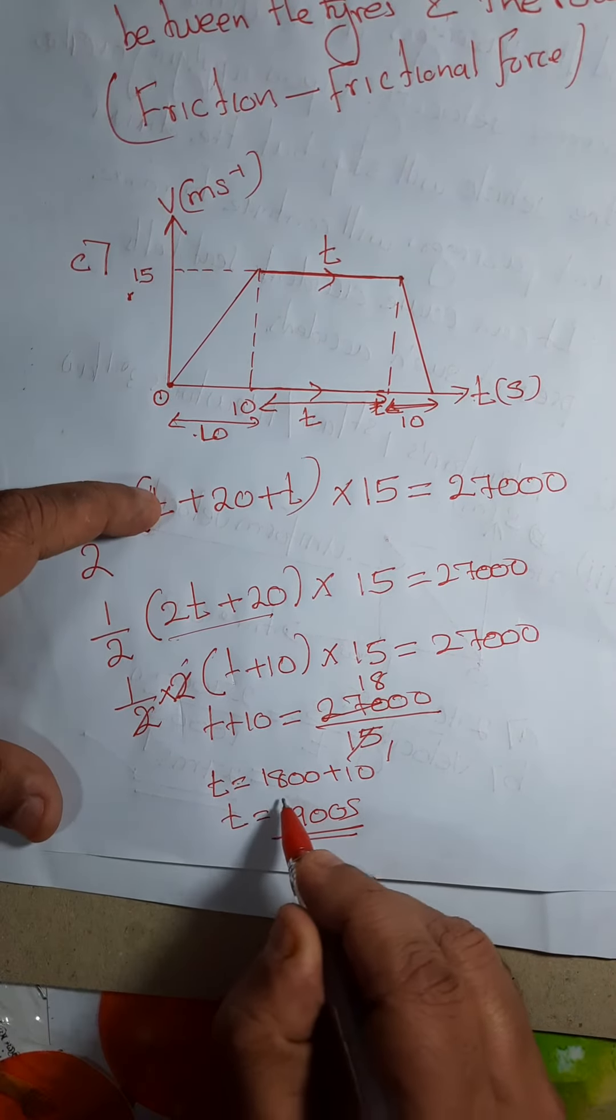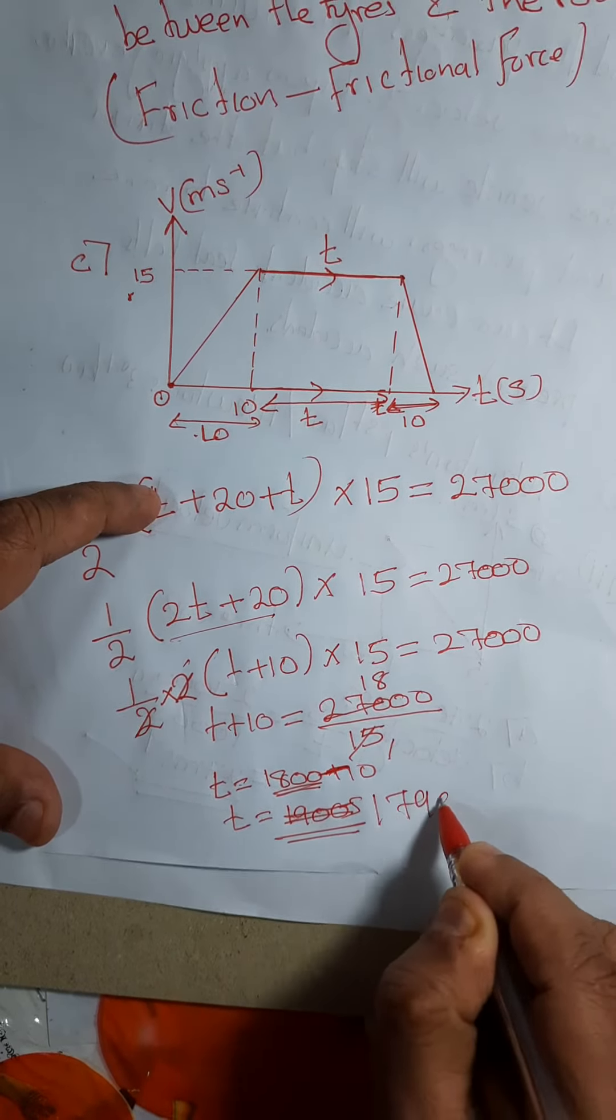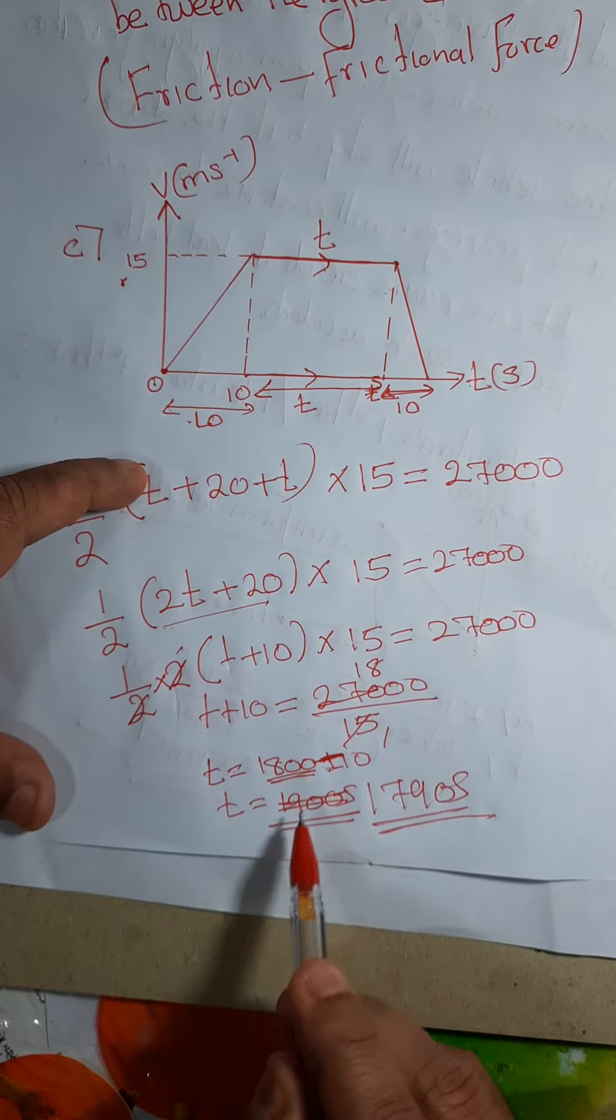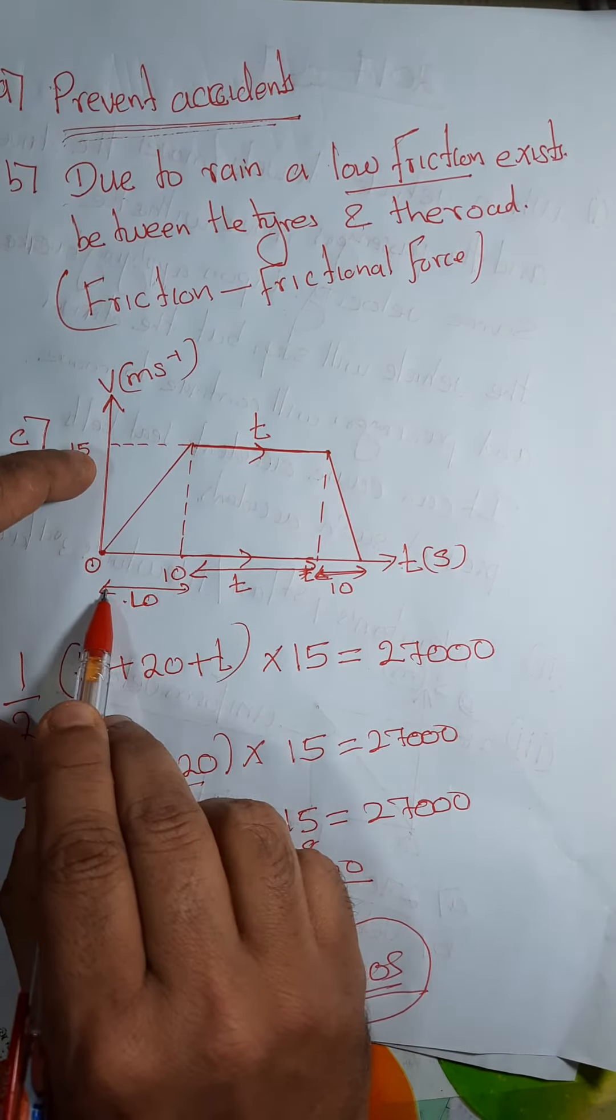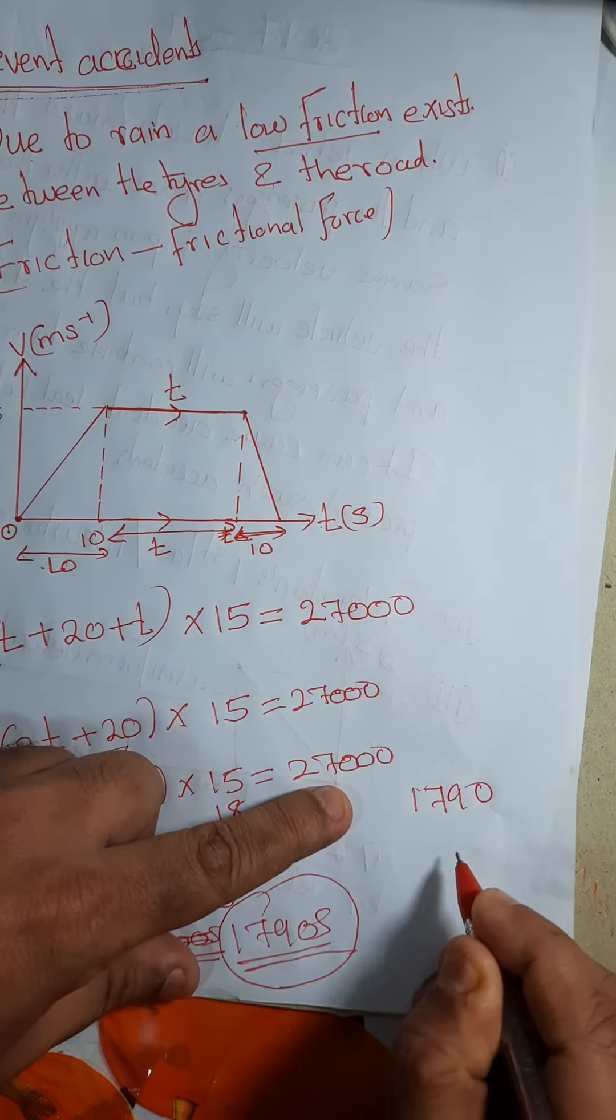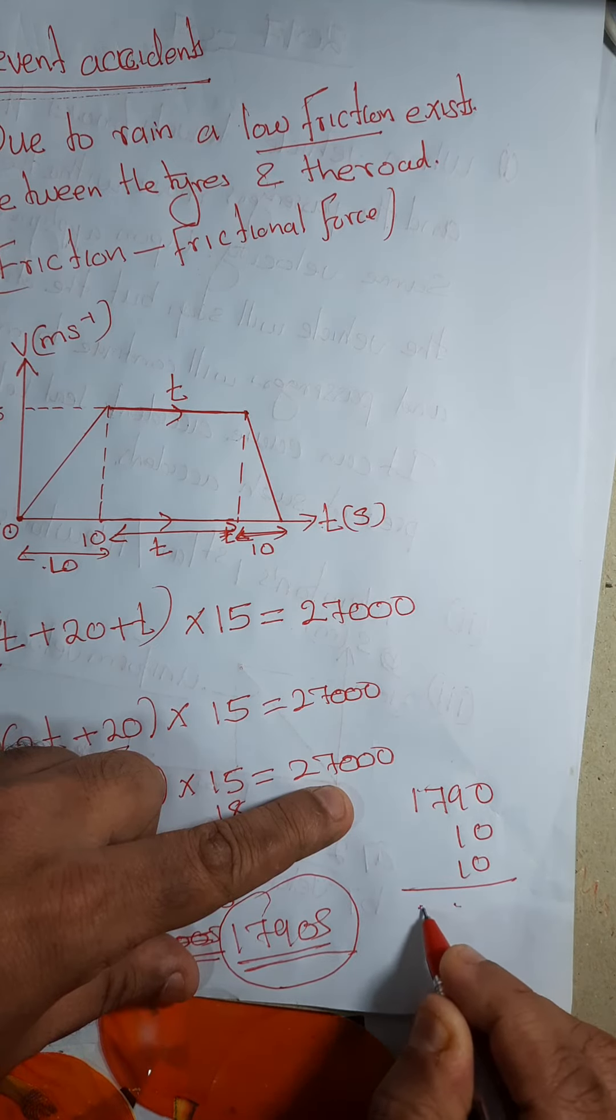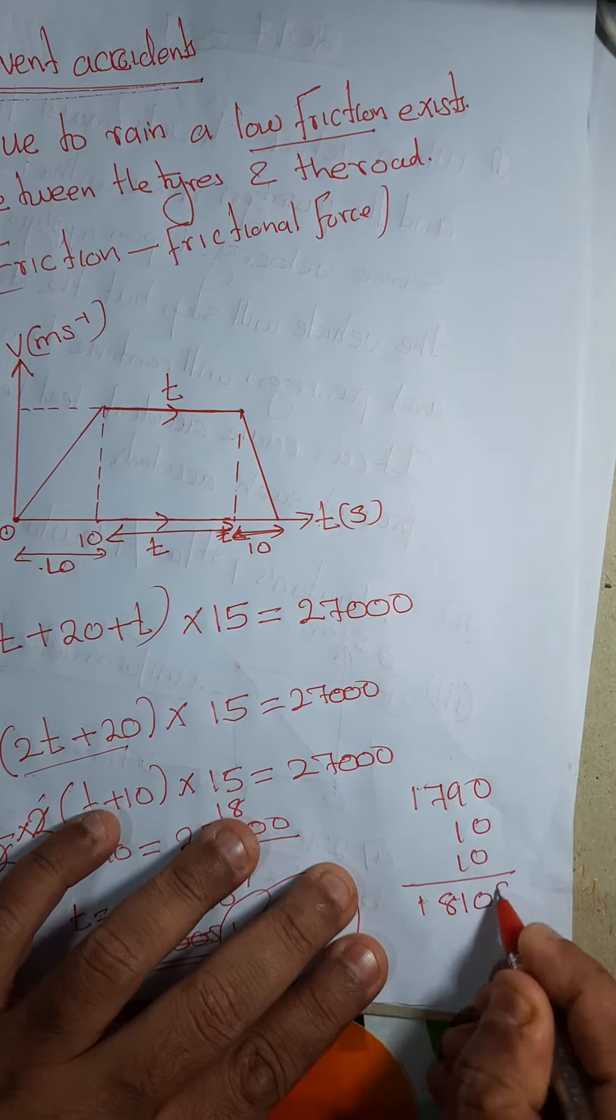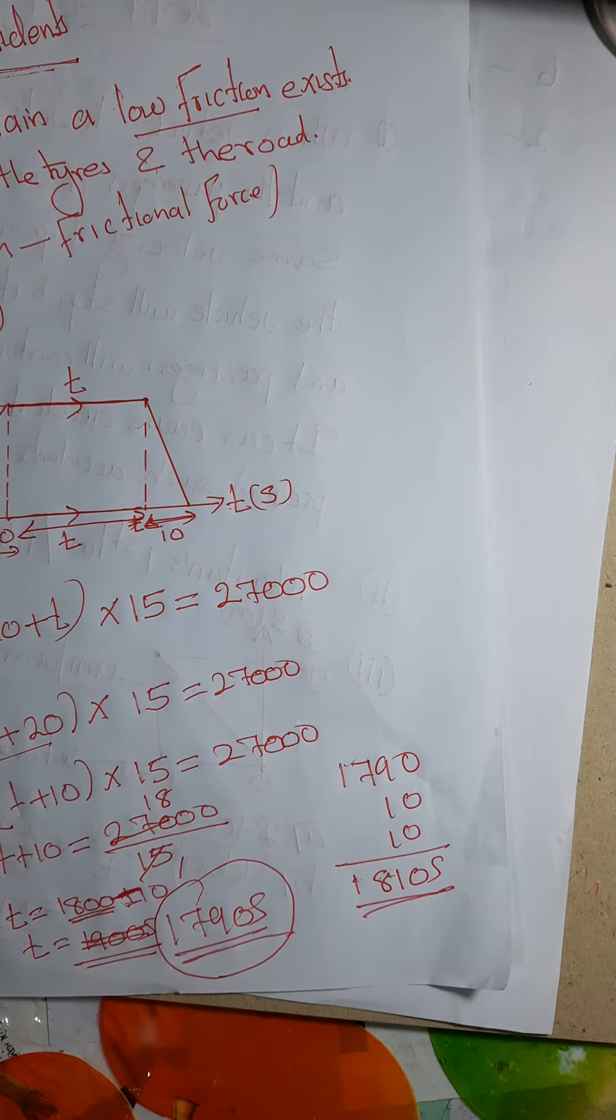Here half into 2 can be taken as a common factor out for this. T plus 10 into 15 equal to 27,000. This 2 and 2 can be cancelled. T plus 10 is equal to 27,000 divided by 15. There are 9 thirties in 270. Then in fifteens, there are 18. So T equal to 1,800. A small mistake, my children. So 1,800, it should be minus. So it will be 1,790 seconds will come. 1,800 plus 10 is going to other side, so minus 10, so 1,890 seconds will come. Now that is only this part, the T part. This 10, this 10 should be added. So total distance is 1,790 plus 10 plus 10, altogether 1,810 seconds are coming. So this is your final answer, 1,810 seconds.